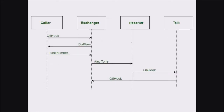Now let us consider an example — a phone call conversation. In this example, a caller is trying to establish a communication with a receiver. During a phone call, first we pick up the phone, then we dial the number, we hear the ringtone, then the receiver picks up the call, and the communication is established. These different processes are represented in the sequence diagram.